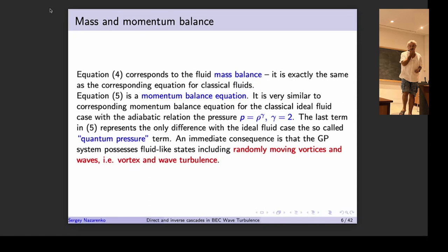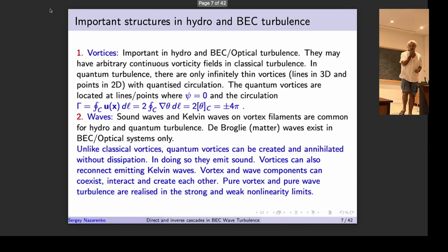Since we have a fluid representation, we have many fluid-like motions, in particular with random vortices and waves that can be randomly moving, representing respectively vortex turbulence or wave turbulence. These are the basic structures in systems like BEC.